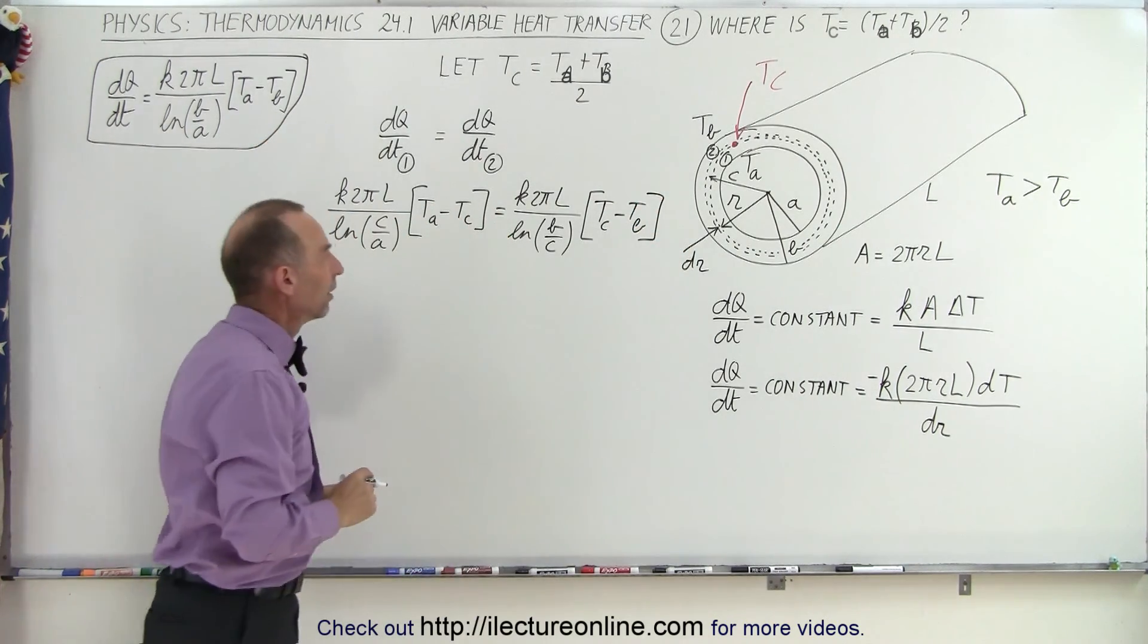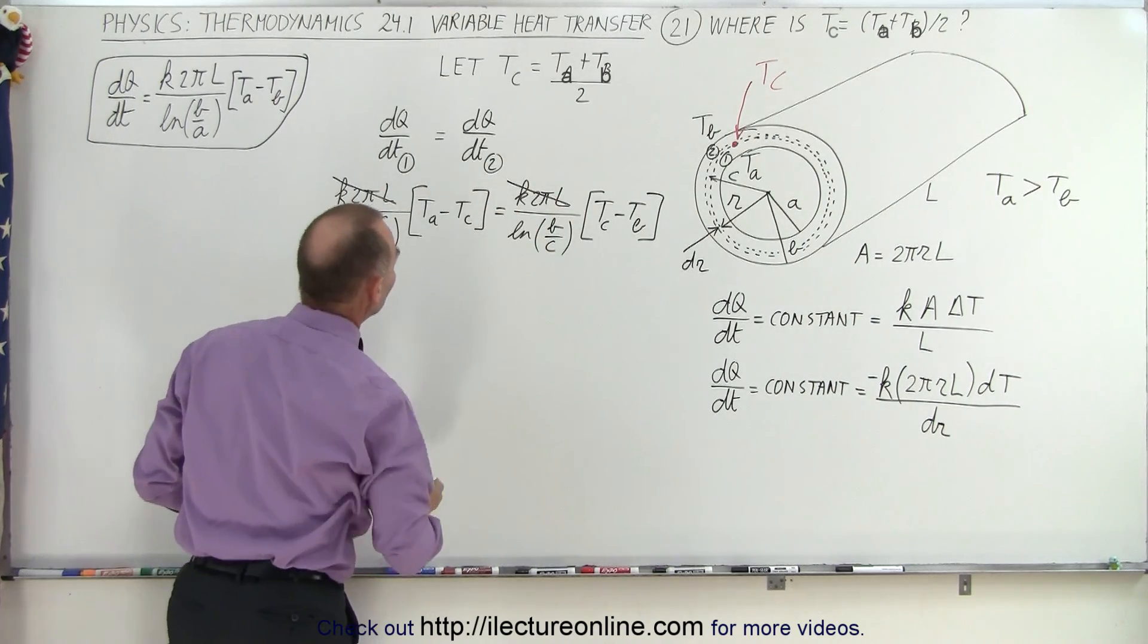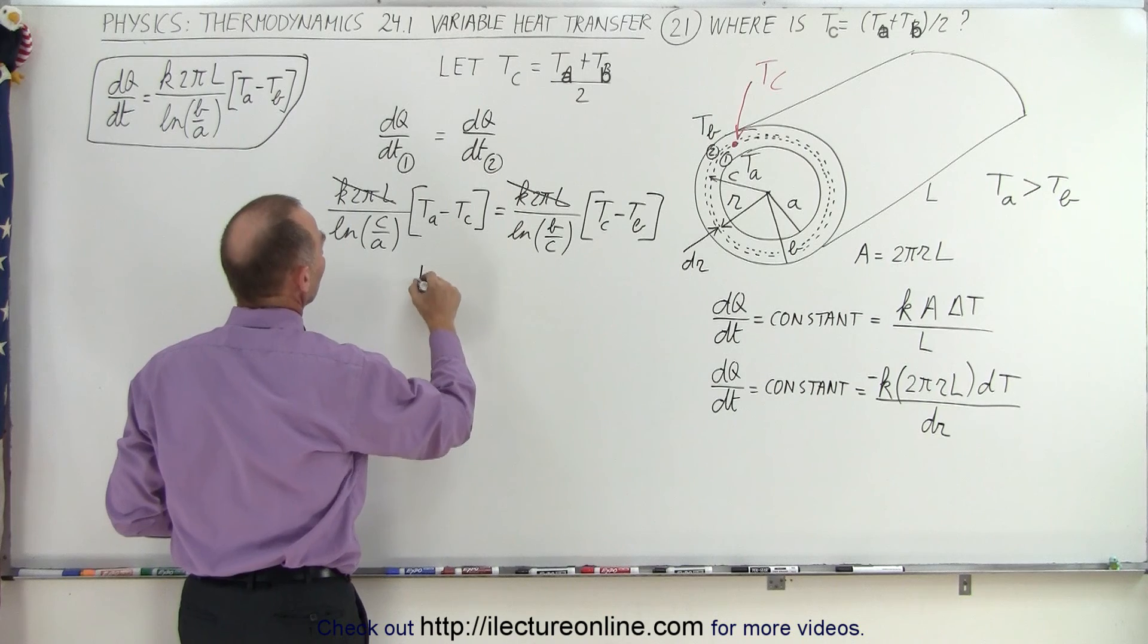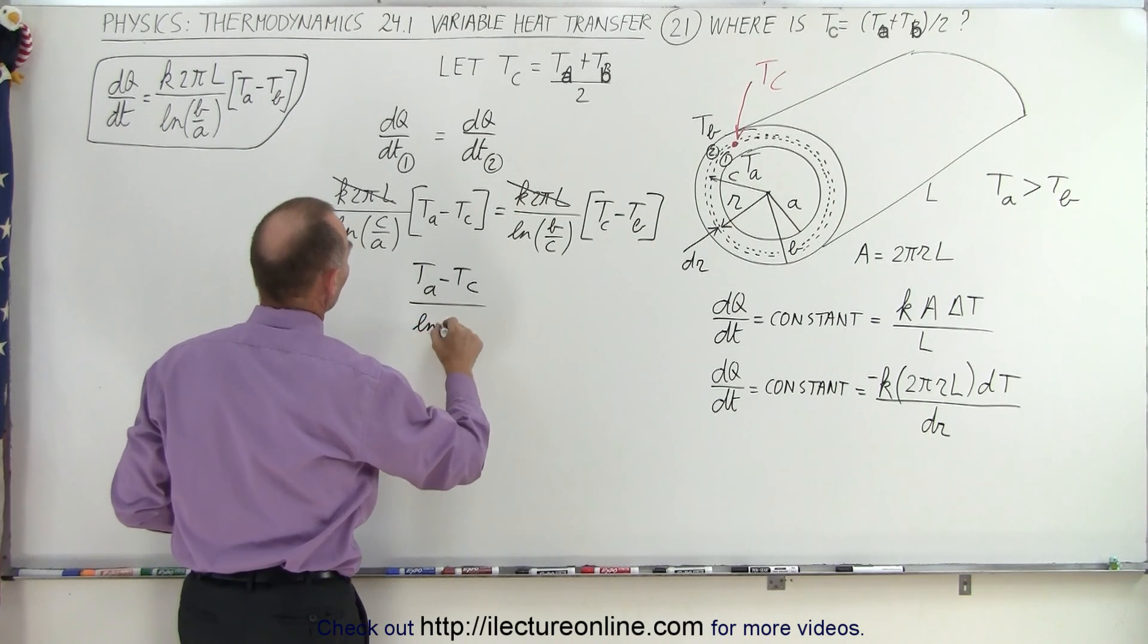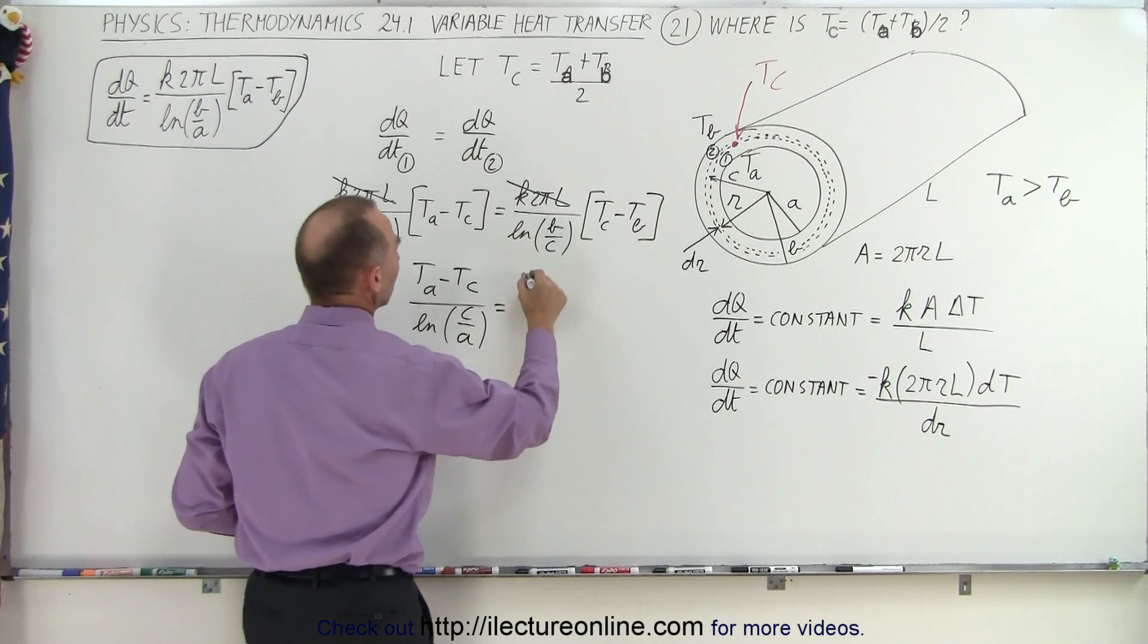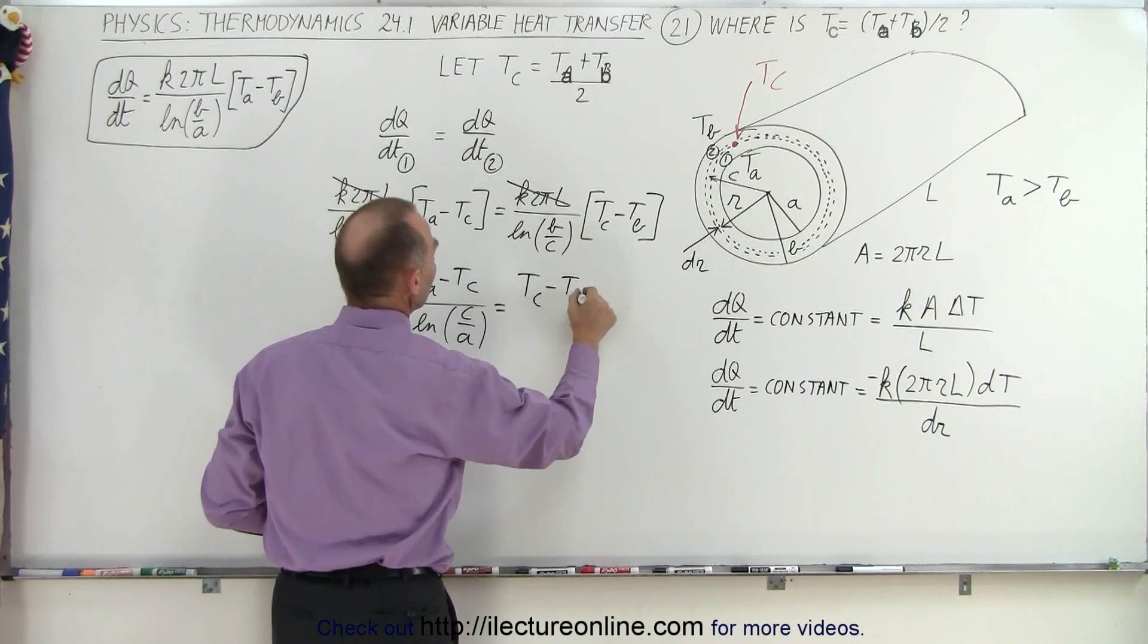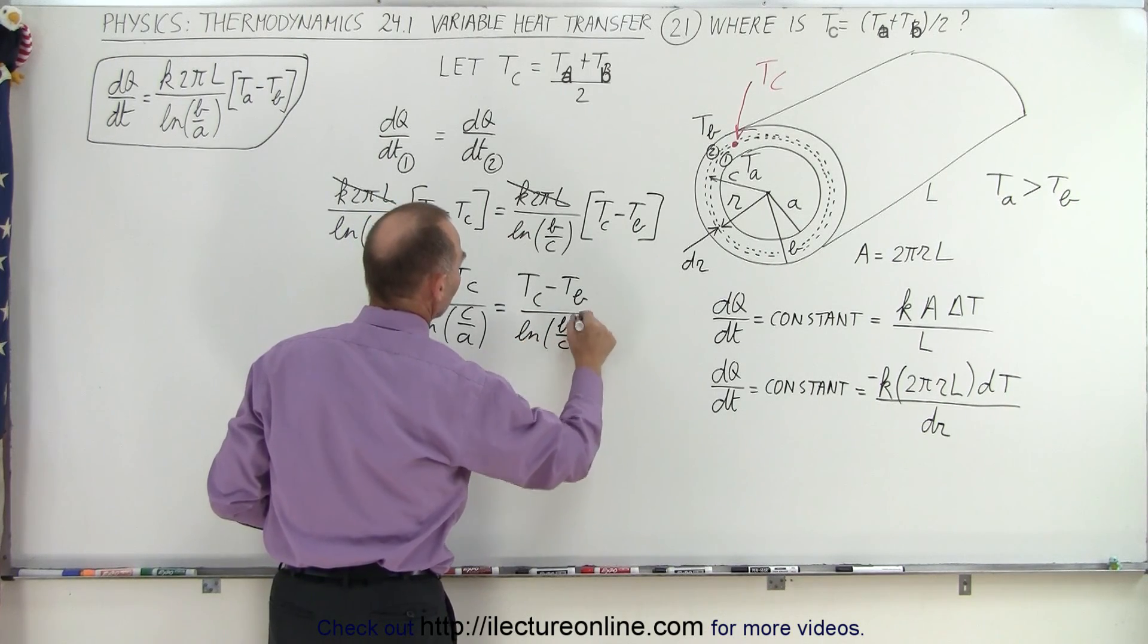Okay, so first of all, we can cancel out everything that's the same, which is this is the same as that, so that cancels, which means we end up with Ta minus Tc divided by the natural log of C over A is equal to Tc minus Tb divided by the natural log of B over C.